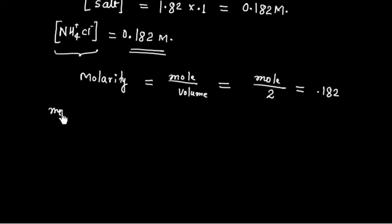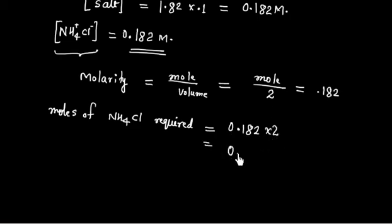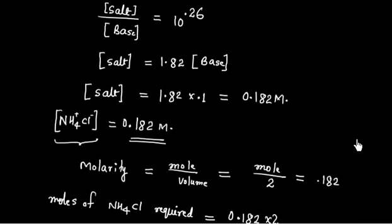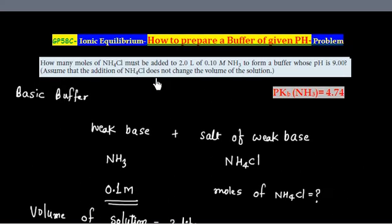So moles by volume is 2 and molarity is 0.182. So moles of NH4Cl added, this equals 0.182 multiplied by 2. So this is 0.364. So moles of NH4Cl needed is 0.364. So we have to add 0.364 mole of ammonium chloride into a 2 liter solution to make the desired buffer.